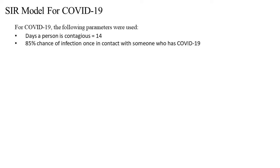Not only that, but instead of using one constant value — for example, for the number of days a person is contagious, or the chances that a person in contact with someone who has COVID-19 will actually catch the virus — these can actually be arrays that change for every day a person is contagious. For example, if the number of days a person is contagious is 14, the chances of transmitting the disease can be an array with 14 parameters, all estimated so that the model can fit the data better.